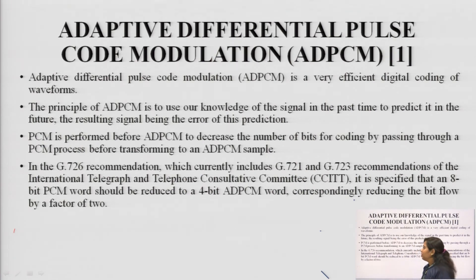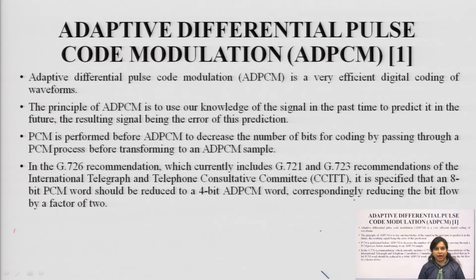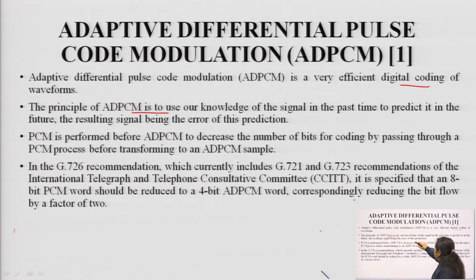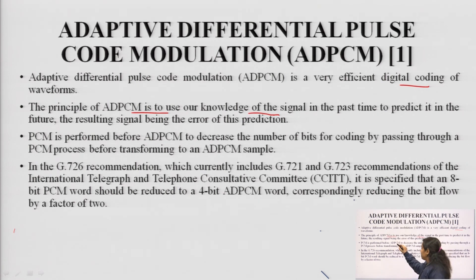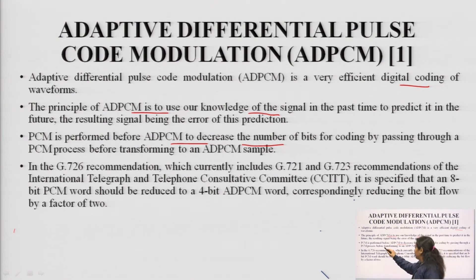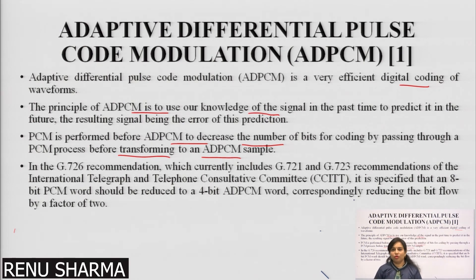ADPCM — adaptive differential pulse code modulation — is an extension of both PCM and DPCM, which is adaptive in nature. It is a very efficient digital coding waveform. The principle of ADPCM is to use knowledge of the signal in the past to predict the future. Whatever is stored previously is used as feedback to process the signal. PCM is performed before ADPCM to decrease the number of bits for coding by passing through the PCM process before transforming to ADPCM samples.